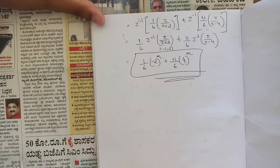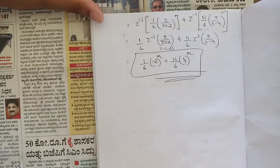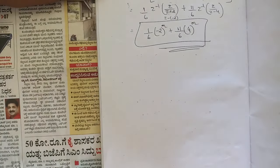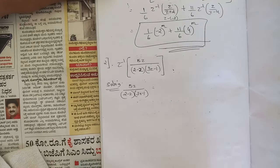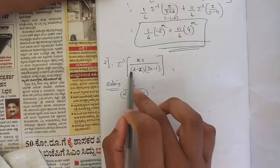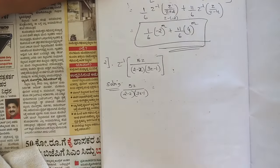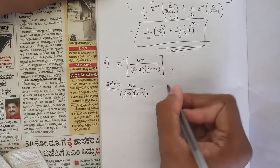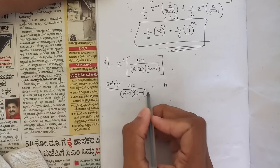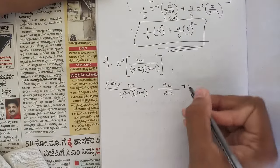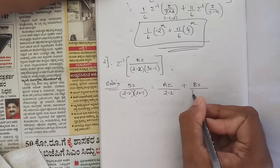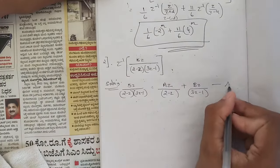That completes Problem 1. Now the second question: find Z-inverse of 5z/((2-z)(3z-1)). We apply the partial fraction rule. Since there is no square term, we directly write: 5z/((2-z)(3z-1)) = A·z/(2-z) + B·z/(3z-1). Consider this as equation star.